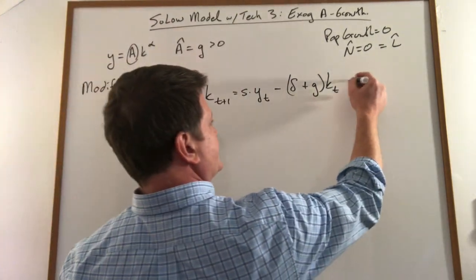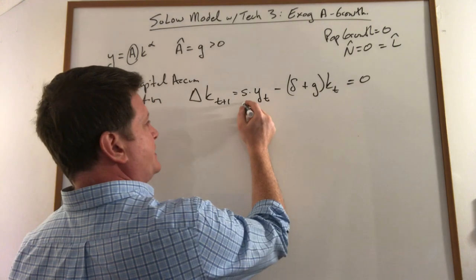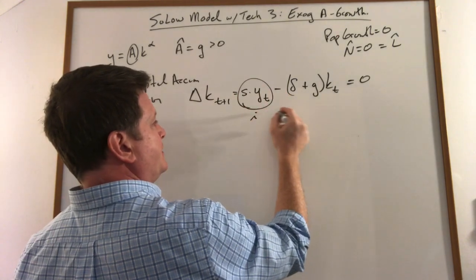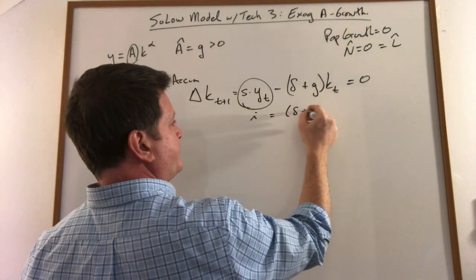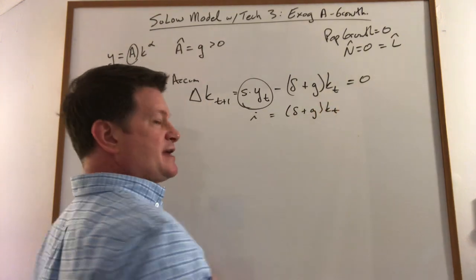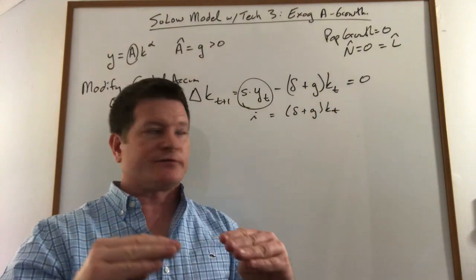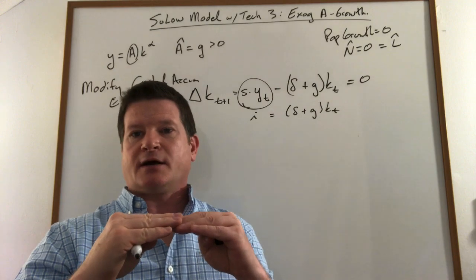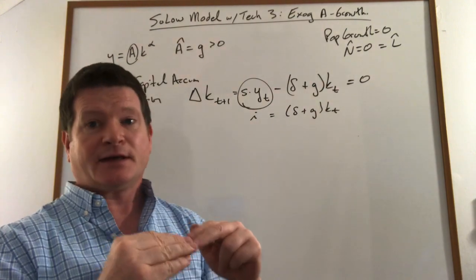In steady state, this is going to be zero, which means our investment must equal this in steady state, which means that's what's required to keep the capital stock per worker constant.